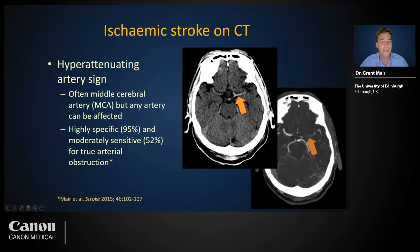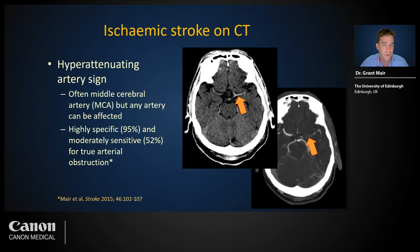Moderate sensitivity means that if the sign is not present, we cannot be confident whether there is an arterial obstruction — it's about 50/50. So half of all arterial obstructions found on CTA are not visible on CT in this way.